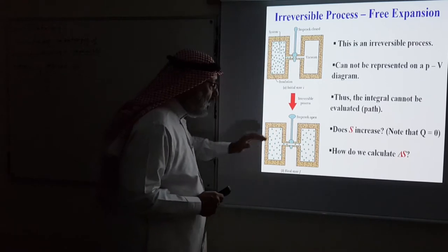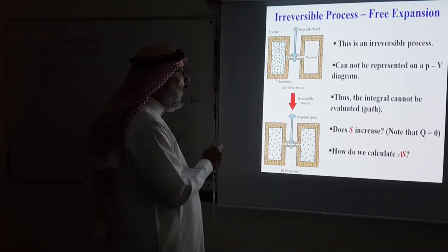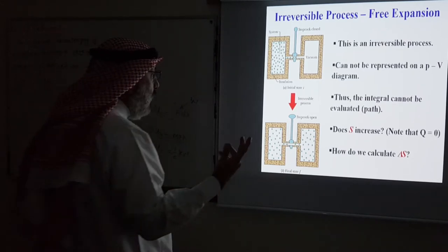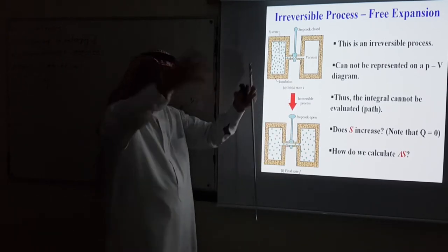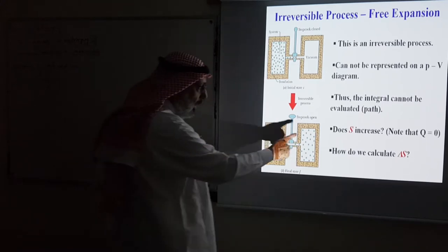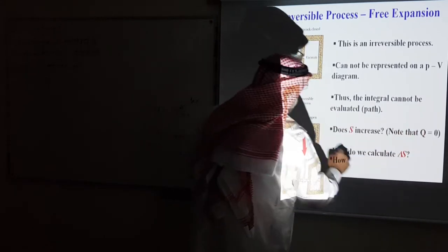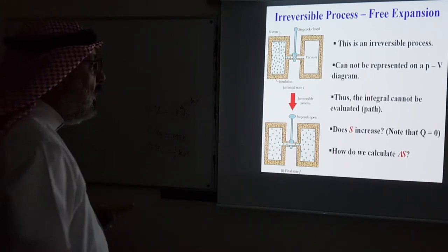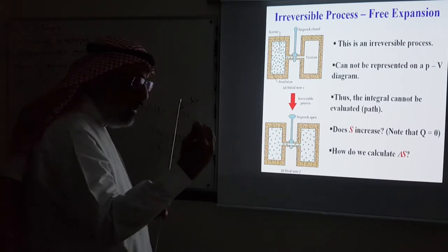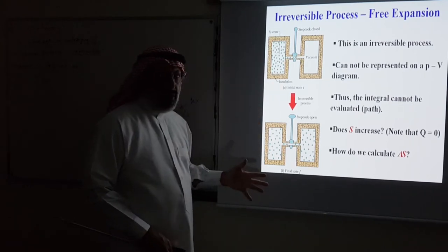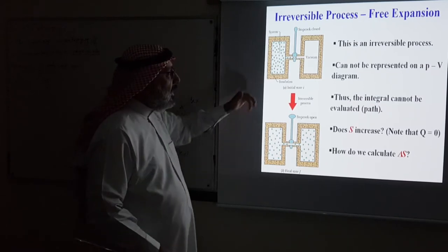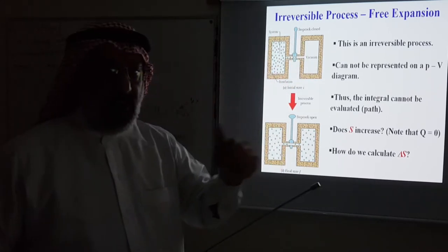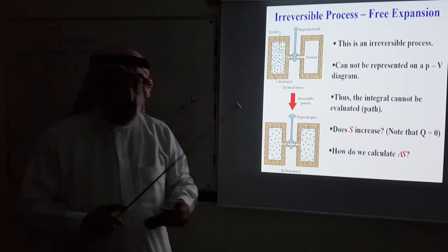Because free expansion is irreversible, it cannot be represented on a PV diagram and the integral cannot be evaluated. However, the entropy does increase — the degree of disorder increases as the gas fills a larger volume. Even though Q is zero (the chamber is insulated), the entropy increases. The trick is to replace this irreversible process with a reversible one having the same initial and final states.